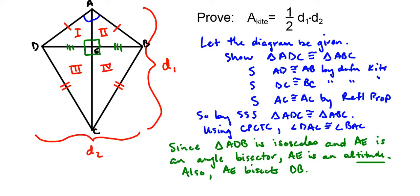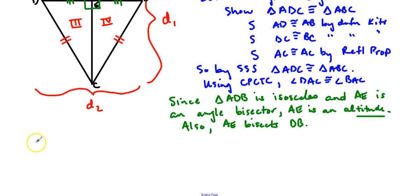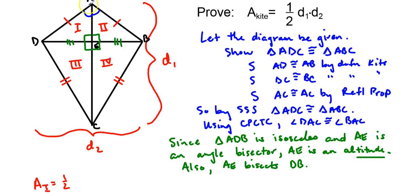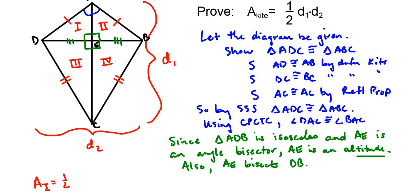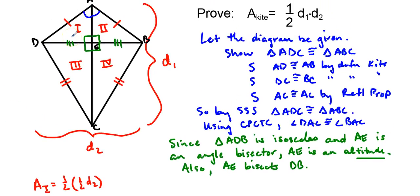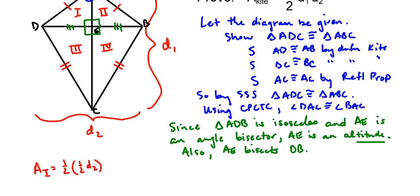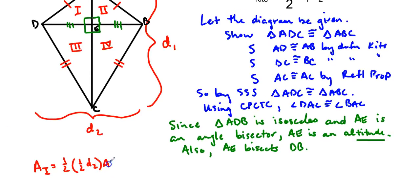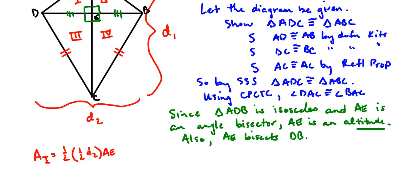So, let's go ahead and do that. So, the area of Roman numeral 1 is going to be one-half the base times the height. Well, in this case, the base of 1 is DE, or one-half the diagonal. So, that's my base. So, that's D2 times the top portion of D1. And that top portion of D1 is AE. So, I'll go ahead and write it as AE. That's your height. So, that's the area of 1. It also happens to be the area of 2.